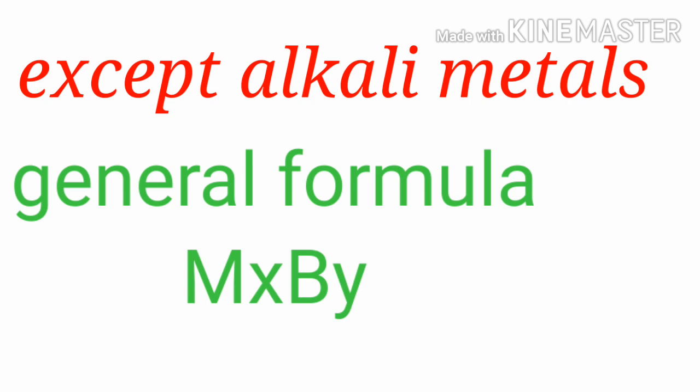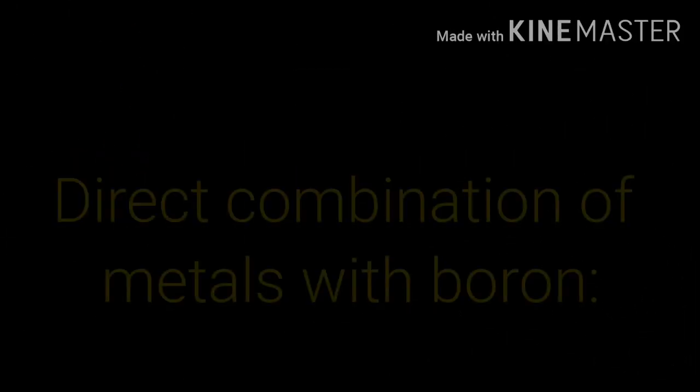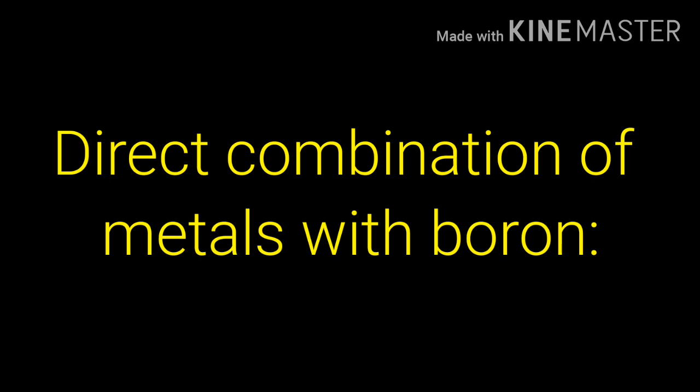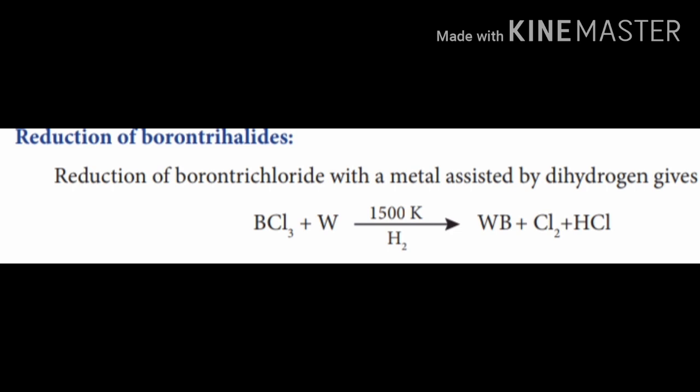The general formula for metal borides is MxBy, where X is ranging from 0 to 11 and Y is ranging from 0 to 66. Direct combination of metals with boron: when chromium reacts with boron at 1500 Kelvin, it forms chromium boride. Second reaction is reduction of boron trihalides: BCl3 plus tungsten at 1500 Kelvin in the presence of dihydrogen forms tungsten boride.